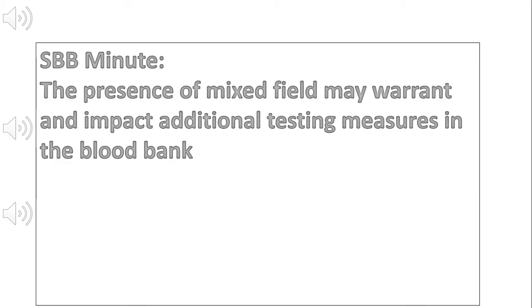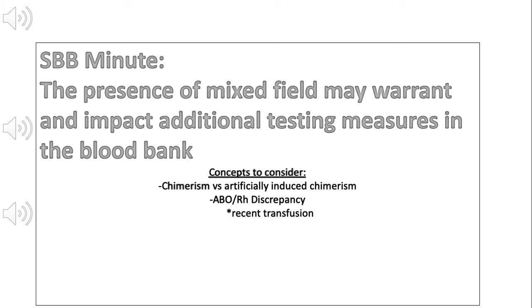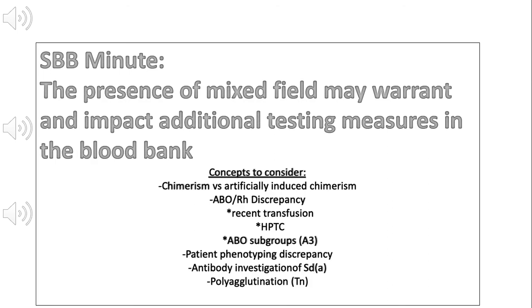Some topics that I urge you to consider, especially within the interest of being an SBB student, is to review the topics and links below and how mixed field is relevant to these terms. These terms include chimerism, ABO discrepancy as it relates to transfusion, hematopoietic progenitor cell transplantation, ABO subgroups, blood typing discrepancies, antibody investigation of SDA, and polyagglutination.